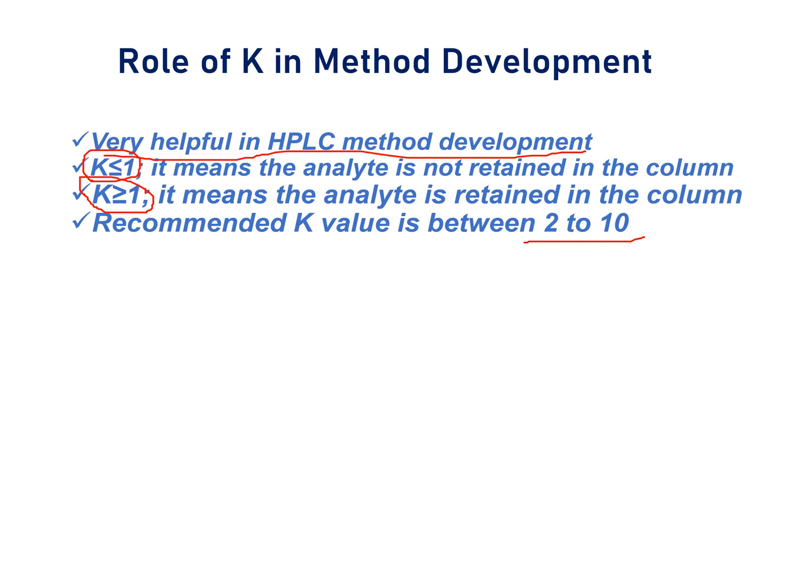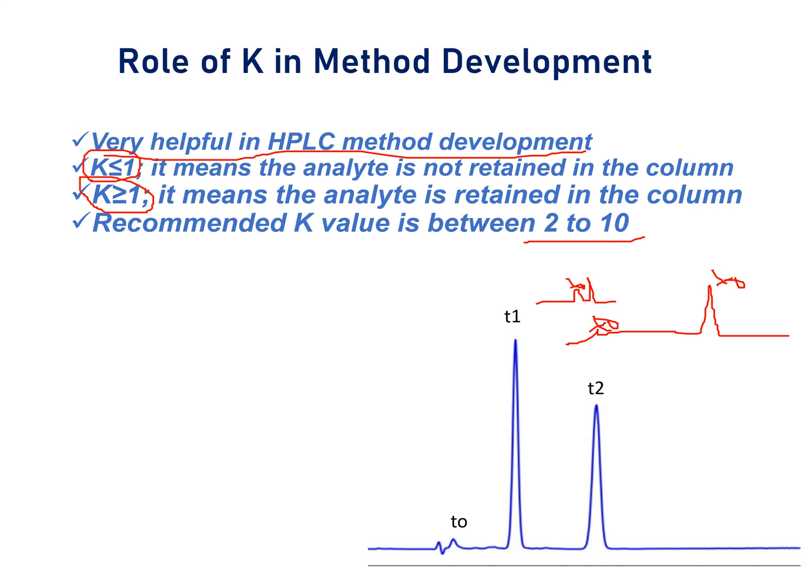Recommended capacity factor value is between 2 to 10. Again, because if capacity factor is less than 2, the molecule or analyte will interact near the void volume peak. Similarly, if capacity factor is high, it means analyte will elute away from the void volume peak and there is a chance that peak shape will be broad. That is the reason for an ideal method, capacity factor should be between 2 to 10.